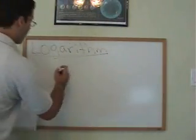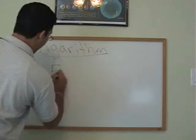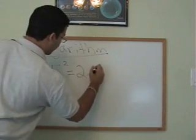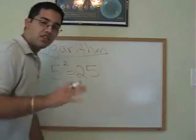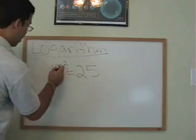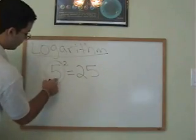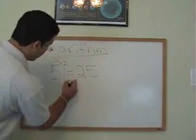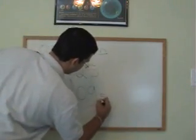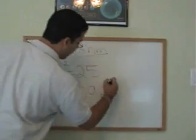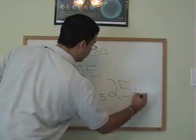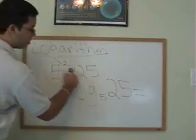Before I even go there, I'm going to teach you how to change a number to logarithmic form. For example, if I have 5 squared is equal to 25, let's change this to logarithmic form. What we're going to do is get our base, which is 5, and you're going to write the log of base 5, and then you're going to write 25, really big here, is equal to the exponent, which is 2.